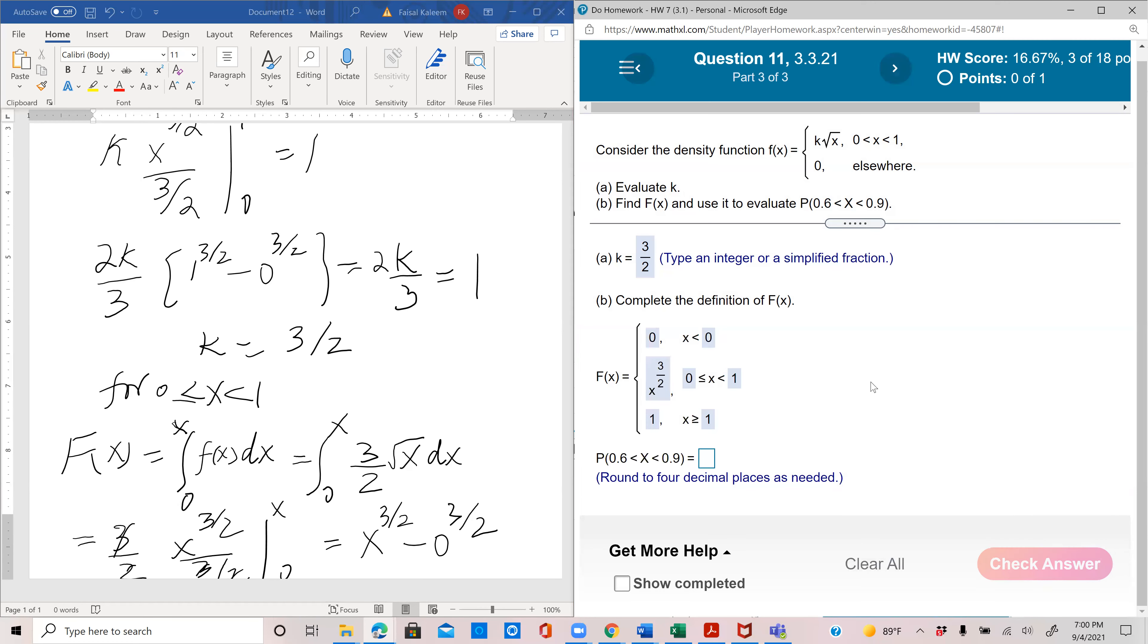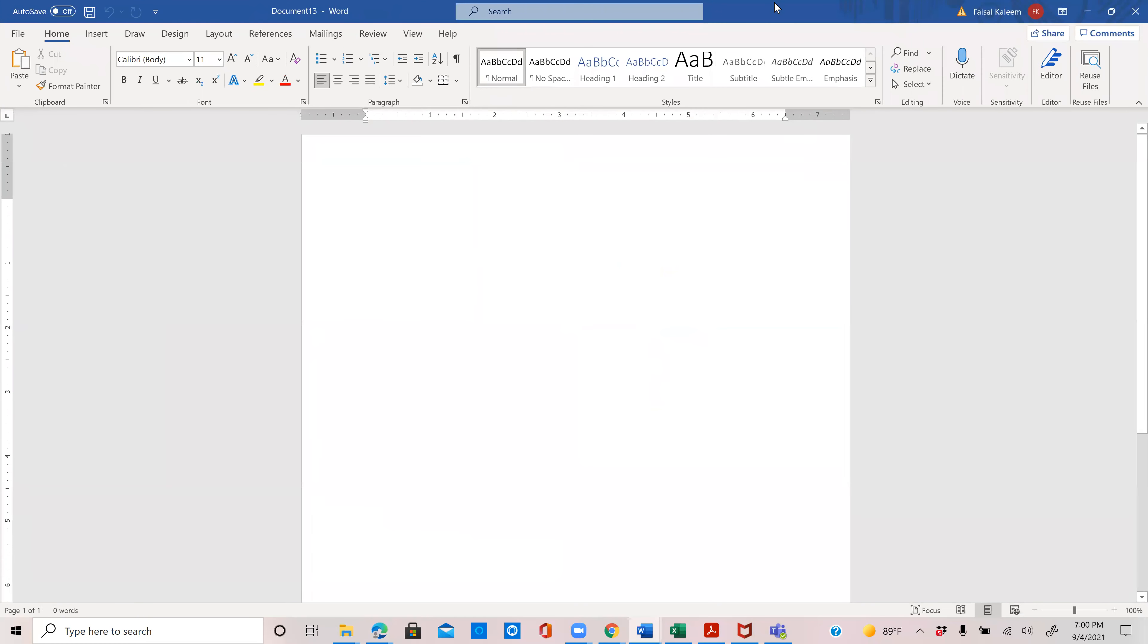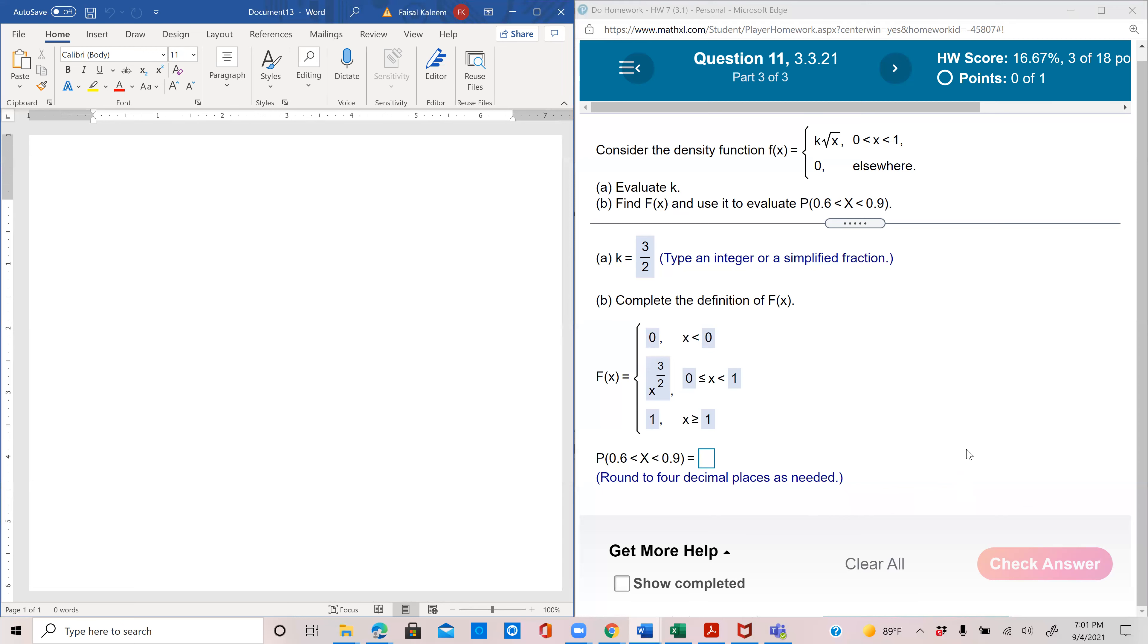OK, and then for probability between 0.6 and 0.9, you can do probability x is between 0.6 and 0.9, so that's big F of 0.9 minus big F of 0.6. So once you've calculated the big F, you can use it to find any probability, and that saves you from integration. Because otherwise, previously, before we were finding the big F, we would find such probability by integrating the density function from these limits. But this time, we can use the big F, and that saves us from integration.